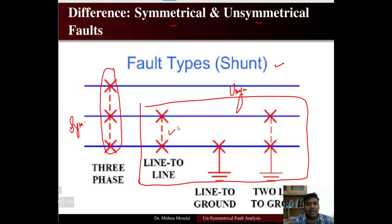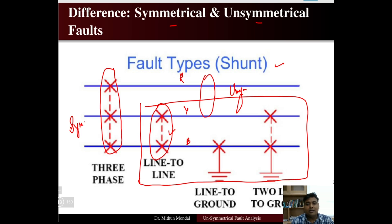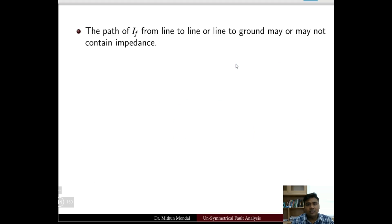For a line to line fault involving two lines — say phases R, Y, and B — if two lines such as YB or RY are involved, it is a line to line fault. A line to ground fault involves one line shorted to ground. If two lines are shorted to ground, it is a double line to ground fault.